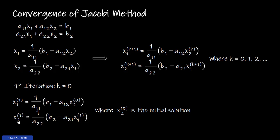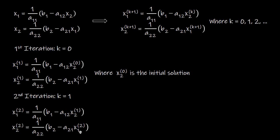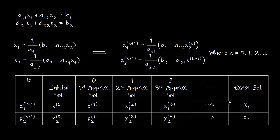Similarly, we use the first approximate solutions of X1 and X2 in the second iteration to find the second approximate solutions. To find the second approximate solution of X1 we need the first approximate solution of X2. Once we have the second approximate solution of X1 from the first equation, we use that value in the solution expression of X2 to get the second approximate solution of X2.